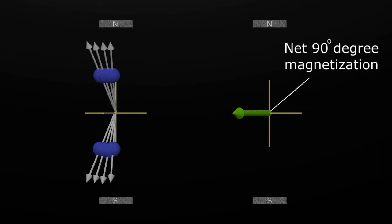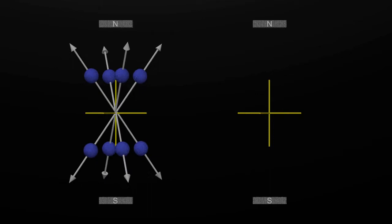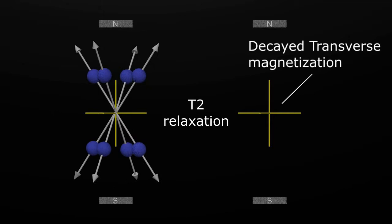As they fall back down to baseline, two things happen. The protons, all being positively charged, repel and move away from each other, become unsynchronized, and in the process destroy the transverse magnetization. This is referred to as T2 relaxation. Then the protons fall back to their baseline low energy state and regrow the longitudinal magnetization. This is the T1 relaxation.